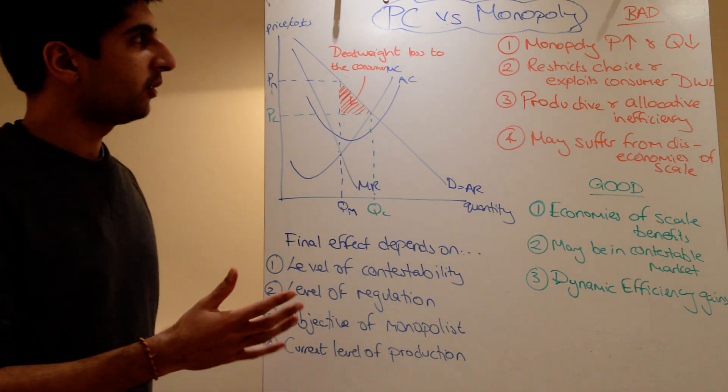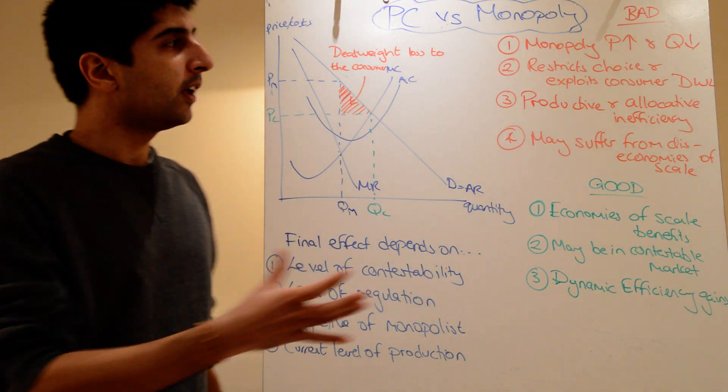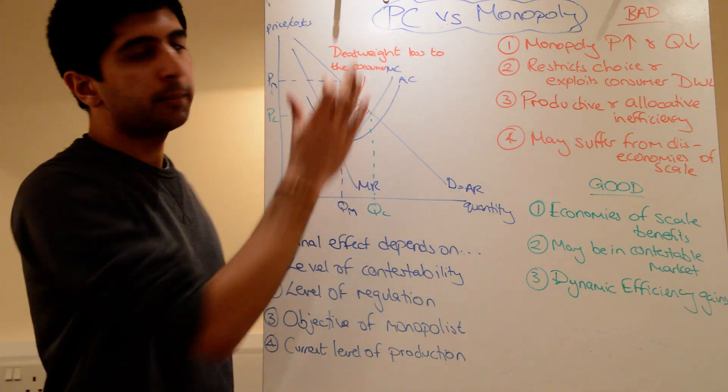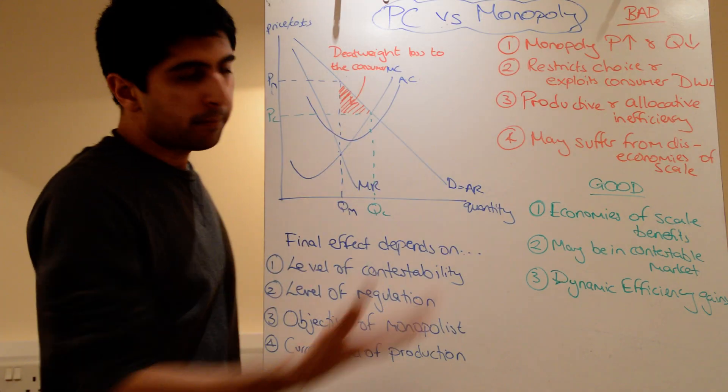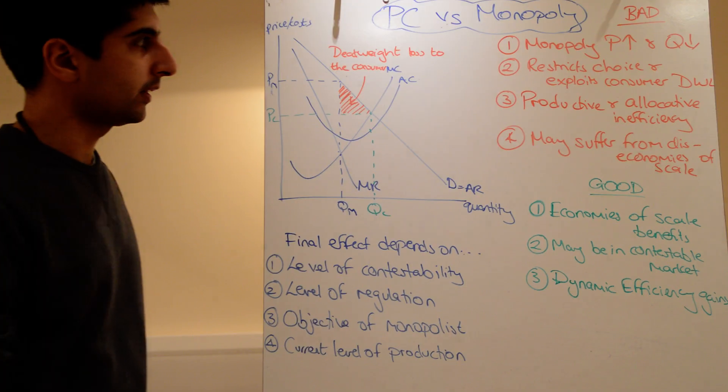Right, a very common exam question when it comes to market structures is to evaluate whether monopoly is always bad and to evaluate whether perfect competition is always good. So, this is a very basic exam structure to help you actually form an essay plan for a question like this.